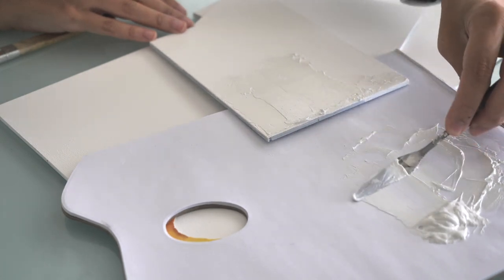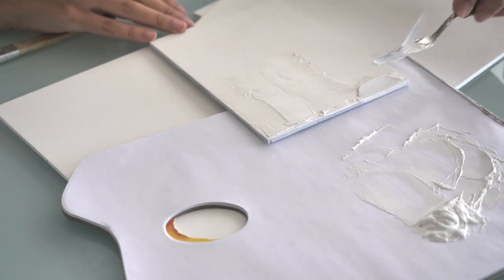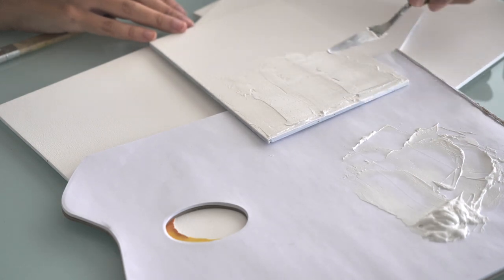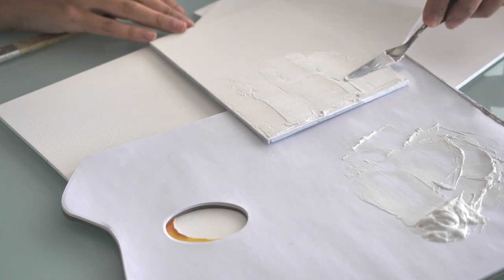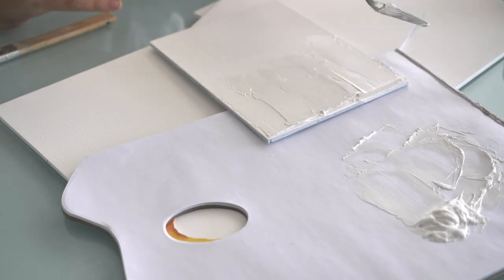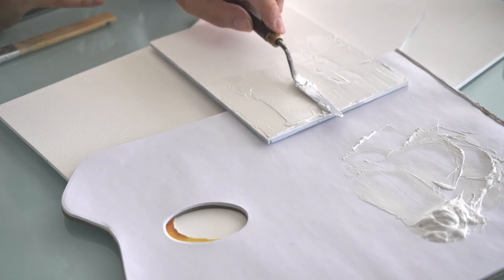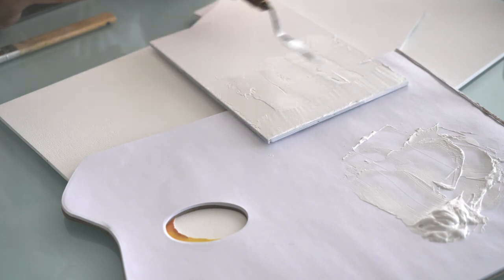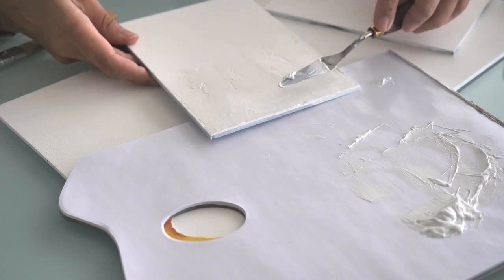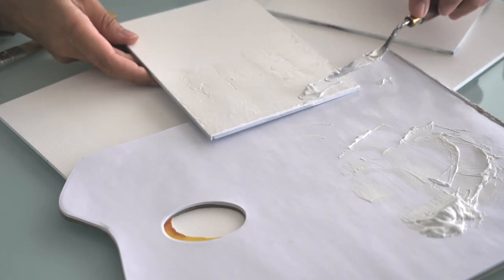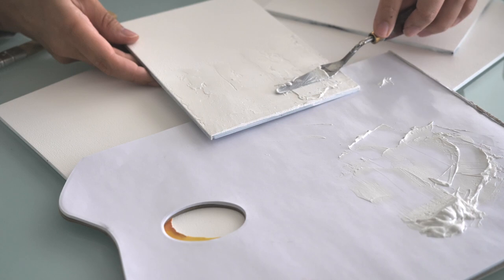I have read that the stiffer you make your mix, the deeper and bigger your cracks are going to be. So I'm not sure how any of this is going to work on a panel, because I'm not working on canvas or paper, which is quite flexible, and it's a very rigid panel. So I'm just going to go ahead and put this on.